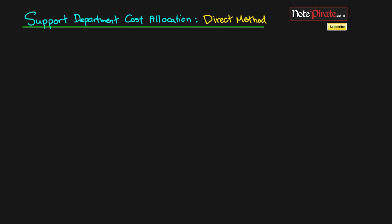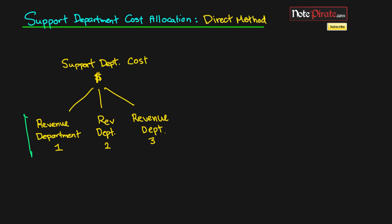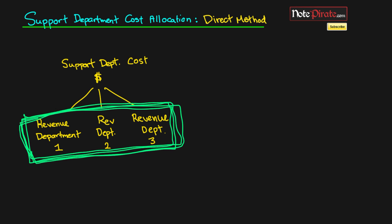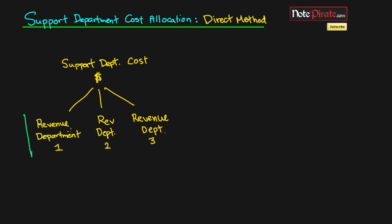The goal of this video is to actually allocate all of the cost from all support departments to revenue producing departments. That is the ultimate goal — we want all of the cost to be fairly allocated to revenue producing departments, and that goes for all three methods. They're all going to end up ultimately in revenue producing departments.